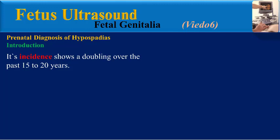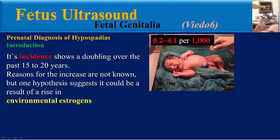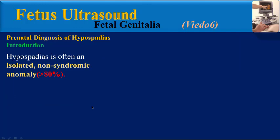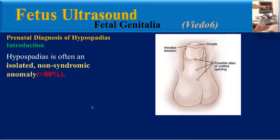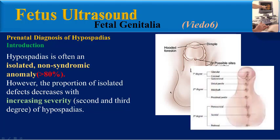Its incidence shows a doubling over the past 15 to 20 years. Reasons for the increase are not known, but one hypothesis suggests it could be a result of a rise in environmental estrogens. Hypospadias is often an isolated and non-syndromic anomaly in more than 80% of cases. However, the proportion of isolated defects decreases with increasing severity at the second and third degree of hypospadias.